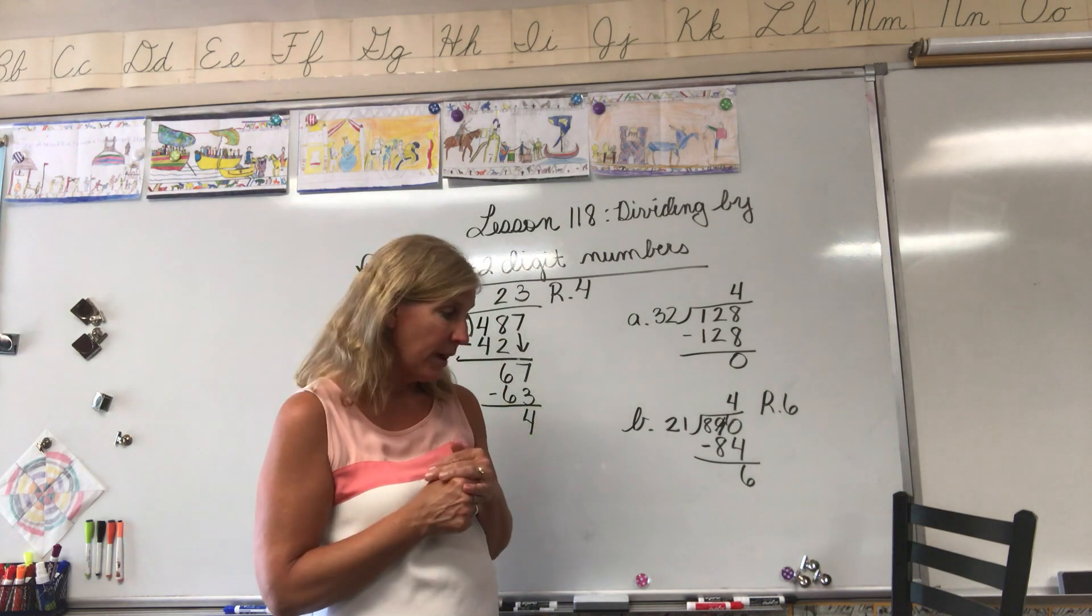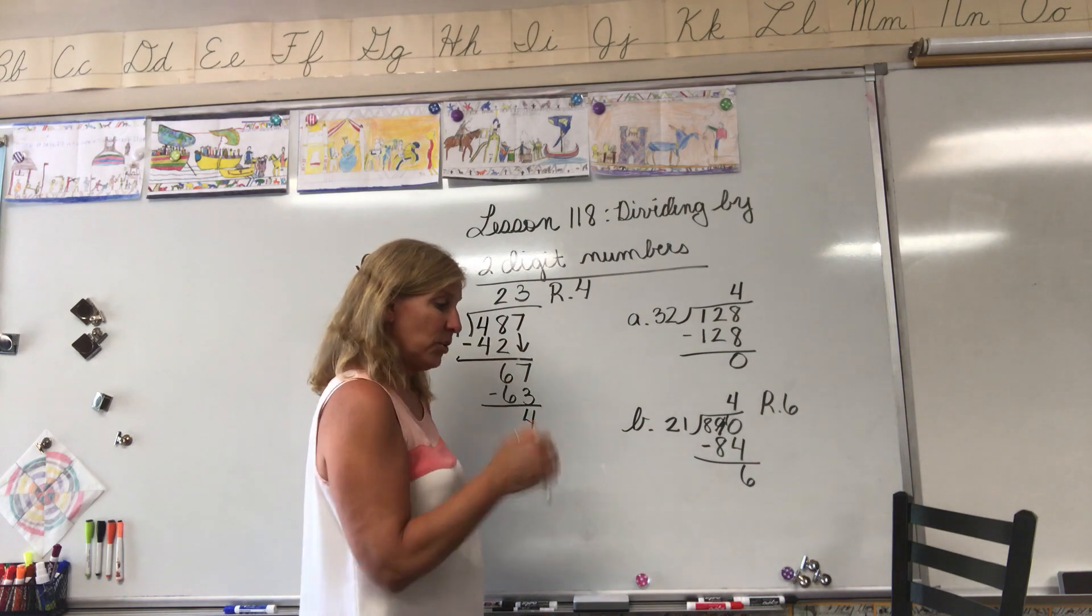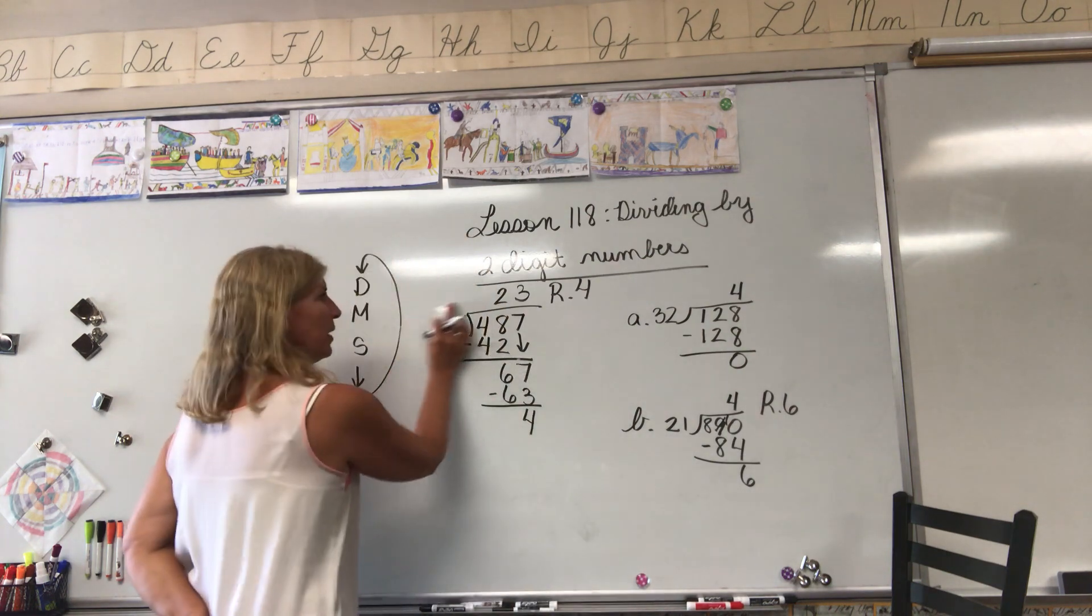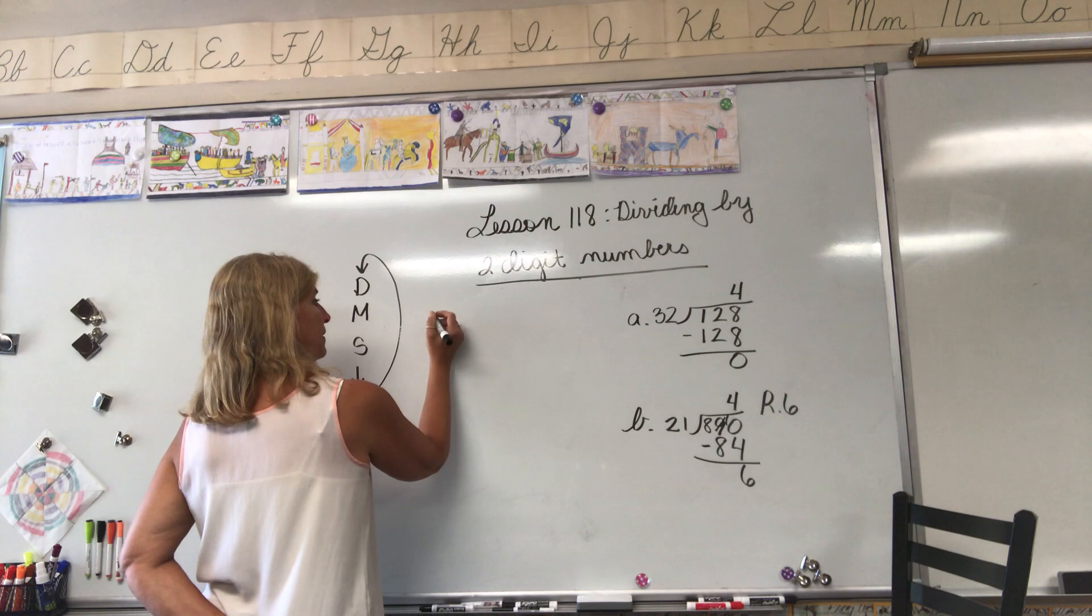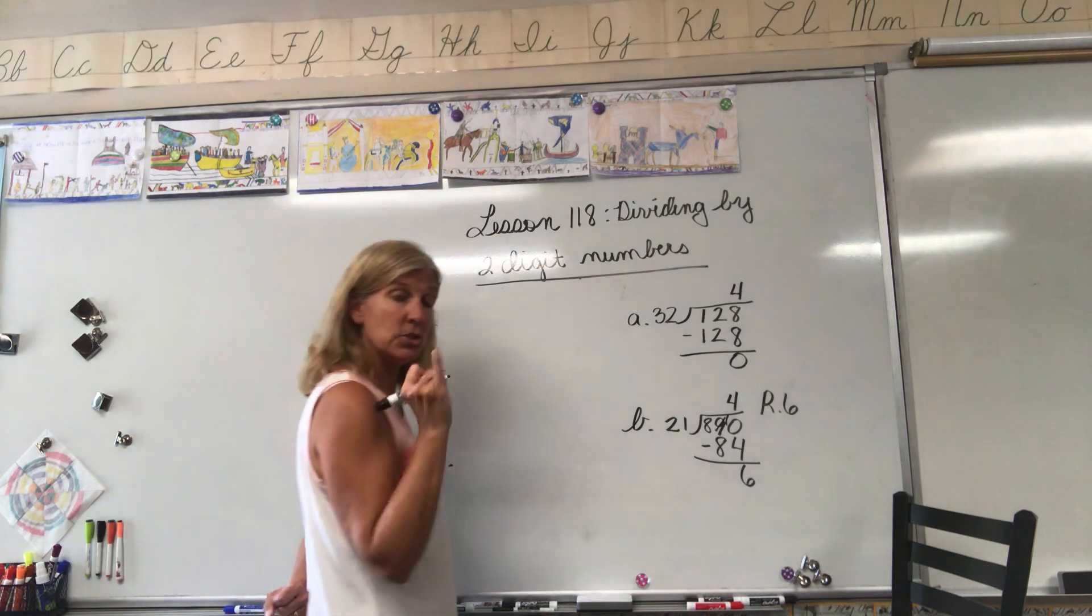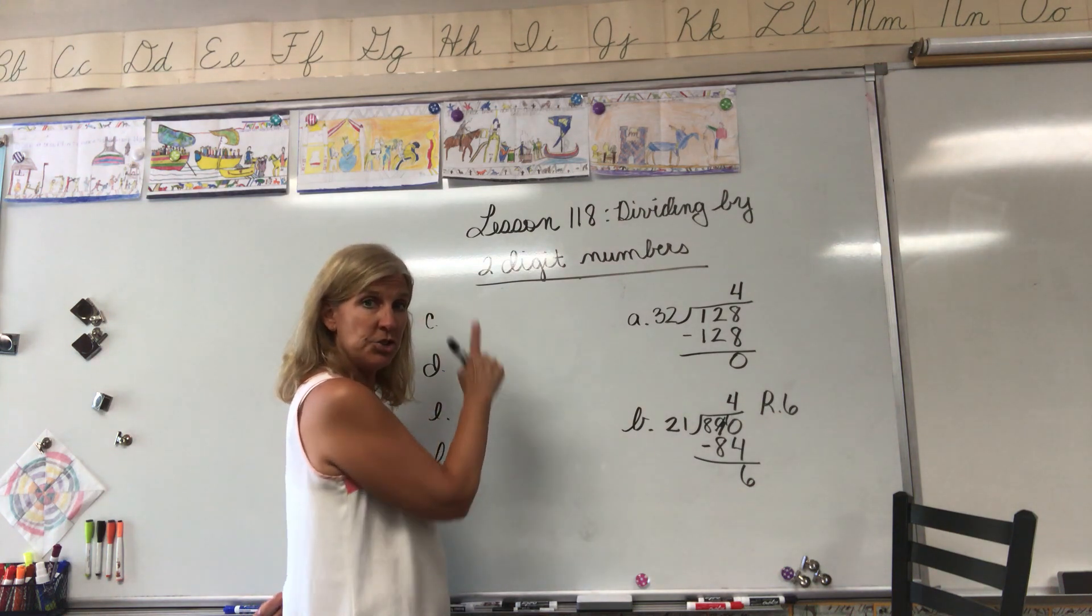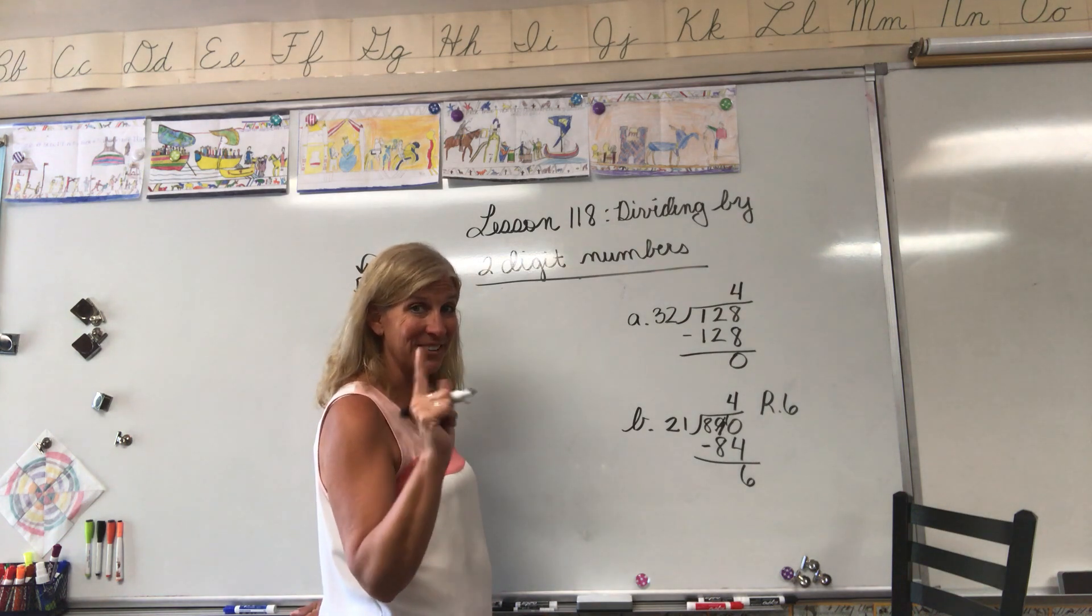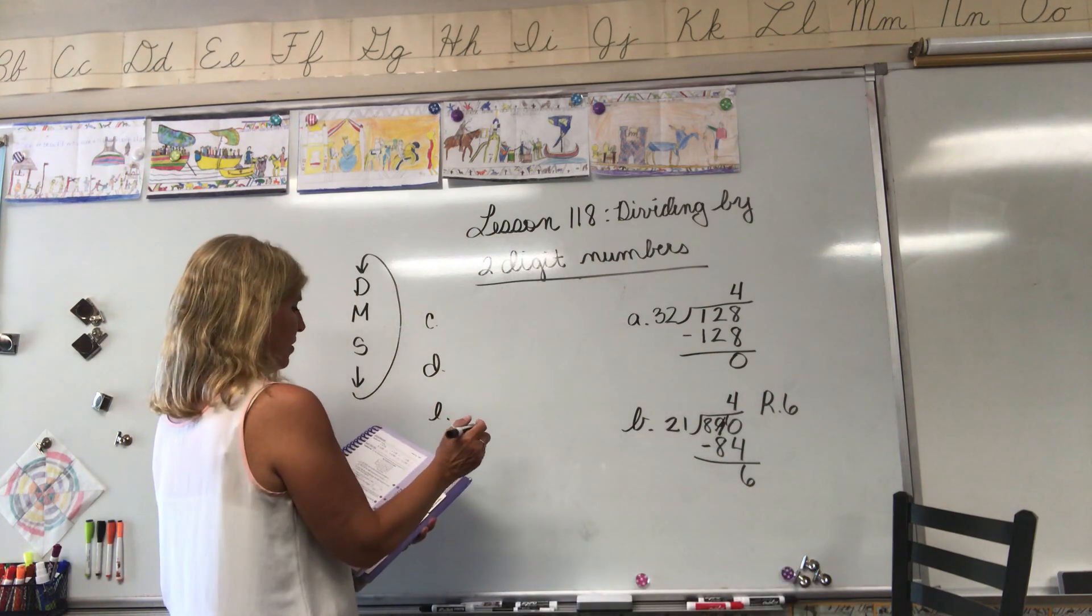Go ahead and do the next several lesson practice problems and ask your parent to check them before you move on to your written practice. In fact, I'm going to go ahead and tell you I want you to pause the video. I want you to do C, D, E, and F. I want you to pause the video, do those four problems, turn the video back on. I'm going to write the answers only on the board. Check your work. If you didn't get the right answer, do the problems again. Turn it off and don't turn it back on until after you have done the problems and then you will find the answers right here on the board.